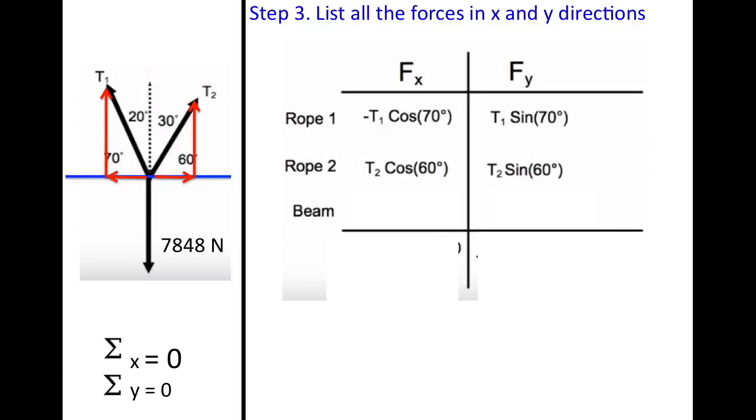And for your beam, we actually don't have an x component. So that is going to be zero. And we have a y component of negative 7,848 newtons. And the reason why that is negative is because if you look over here in our free body diagram, the vector is going down. So therefore it is negative.